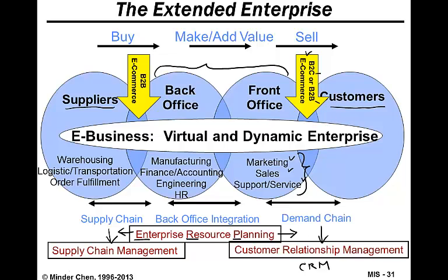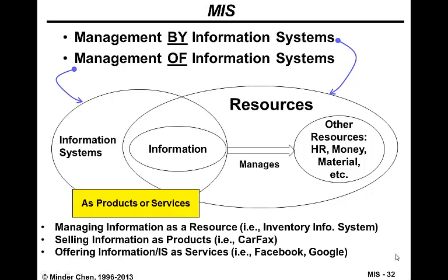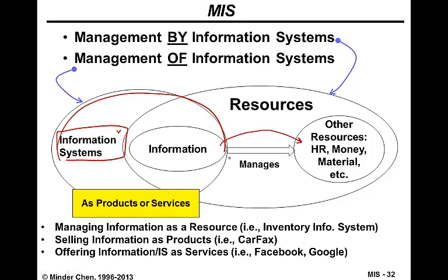We can use web technology via e-commerce to provide business-to-consumer or business-to-business e-commerce operations to support customers. This diagram shows the relationship between traditional resources, information, and information systems. Information can be treated as a resource — one that helps us manage other traditional resources. We need information systems to capture, store, and generate proper information so we can manage other resources. An example would be an inventory information system, which generates proper inventory data to tell us when to reorder so we can prevent out-of-stock or over-stocking.